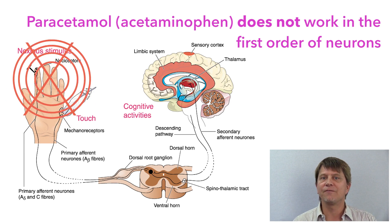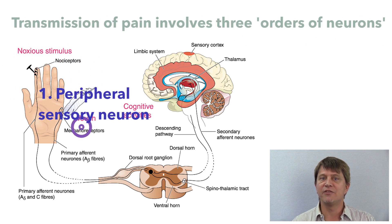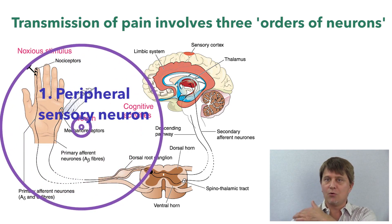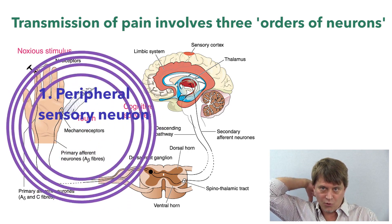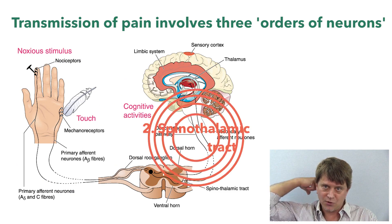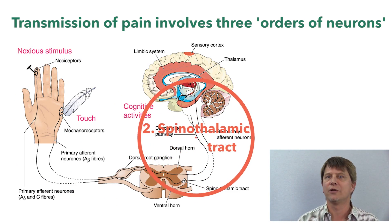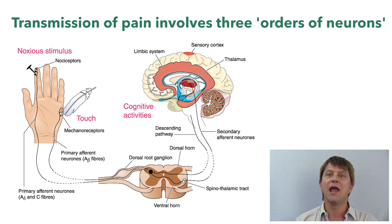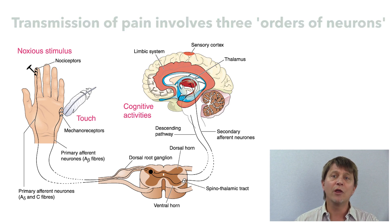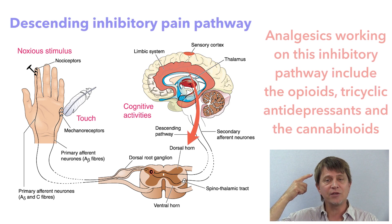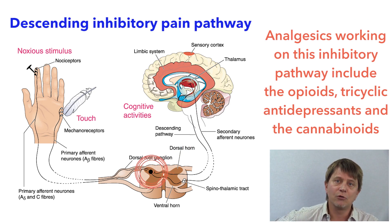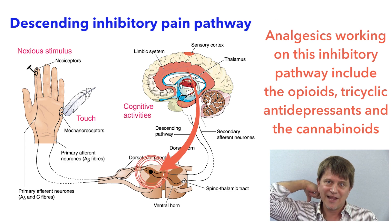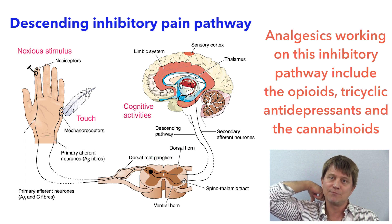Recall how we have three orders of neurons in the pain pathway. The first order of neurons goes from the extremities up into the spinal cord. The second order of neurons goes from the spinal cord to the thalamus, and the third order of neurons takes that message to the brain where it is interpreted. We also have an inhibitory pathway which goes from the brain down to the level of the spinal cord, at the point where the first and second order neurons meet.